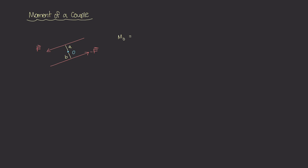The moment at O is going to be the sum of the moments caused by these two forces. The top force vector causes a counterclockwise moment about point O, and that value is the magnitude F times the distance A. To that, we add the magnitude of the bottom force, which is just F — the minus sign is just the direction — times distance B, giving us F times B. Simplifying, this becomes F times (A plus B). I'll just call A plus B as D, so the moment about O equals F times D.